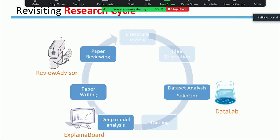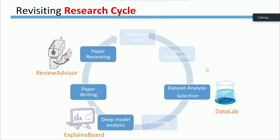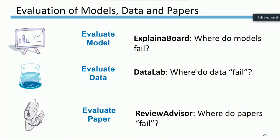You can always find relevant products or research directions for each step in the research cycle. In what follows, I want to share some of our recent work that tries to make research life easier at different steps. One is ExplainBoard, which helps with model analysis. One is DataLab, useful for dataset analysis. The third is ReviewAdvisor, which helps researchers review papers. The high-level commonality of these three works is that all of them try to evaluate something — the model, the data, and the paper.